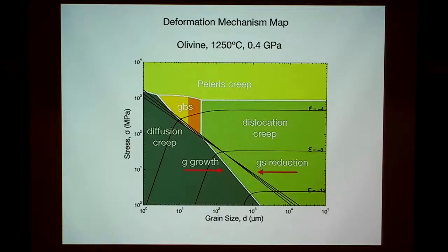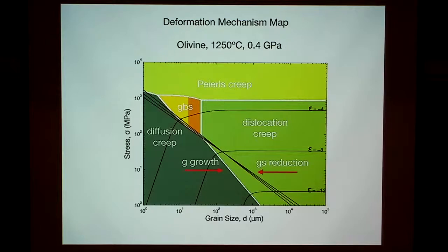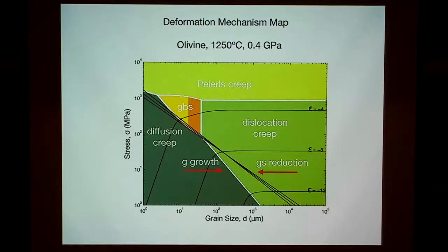The field boundary depends on the relative activation energies — that's why it's important to measure these two creep mechanisms. Another topic I won't go into in detail: the only way to get seismic anisotropy, the only way to align olivine grains so that you see anisotropy, is by dislocation creep. Diffusion creep doesn't depend on orientation in the first instance. Dislocation creep allows lattice preferred orientation, which gives rise macroscopically to seismic anisotropy. We observe seismic anisotropy in the upper mantle and therefore we think dislocation creep is the dominant mechanism.